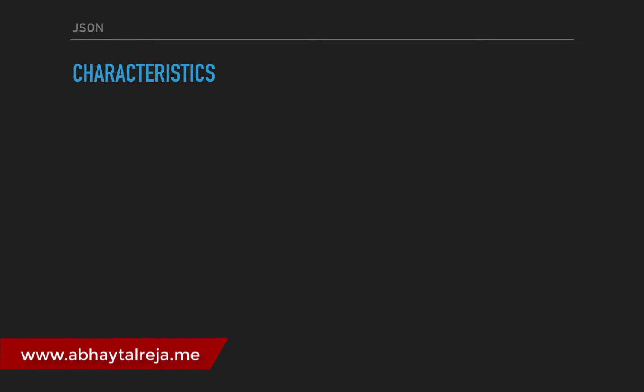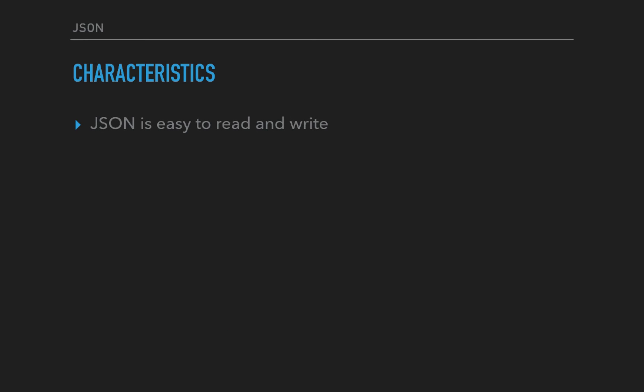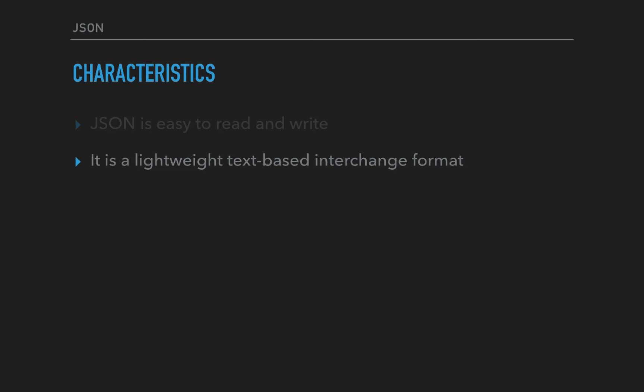Now that we have seen what JSON is, let's quickly go and see what the characteristics that JSON has as well as the data types that it can support. We will see them in action as we move ahead in the section. First and foremost, JSON is very easy to read and write because it is almost similar to what you can expect a JavaScript object to be. JSON is also a very lightweight text-based interchange format - it's very light because it's all strings, so you don't have any complex structures coming into play.